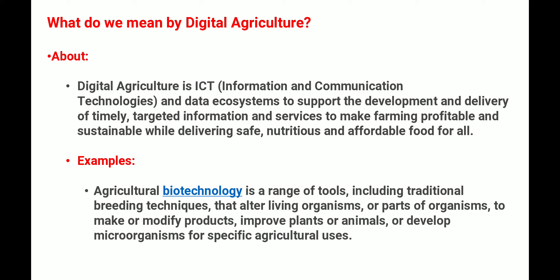Digital agriculture का मतलब क्या होता है? Digital agriculture एक information and communication technology और data ecosystem है जो support करेगा development and delivery of timely, targeted information and services को, जो farming को profitable और sustainable बनाएगी, while delivering safe, nutritious and affordable food for all। इसके examples की बात करें: Agriculture biotechnology एक range of tools है जिसमें traditional breeding techniques आती है, जो living organisms और उनके products को modify करती है, plants और animals को improve करती है।